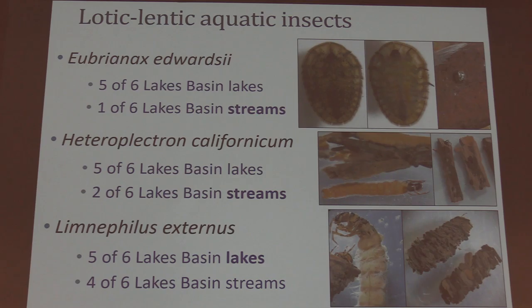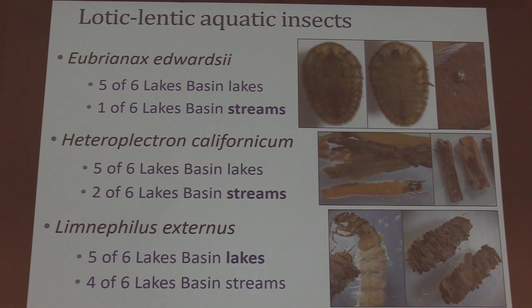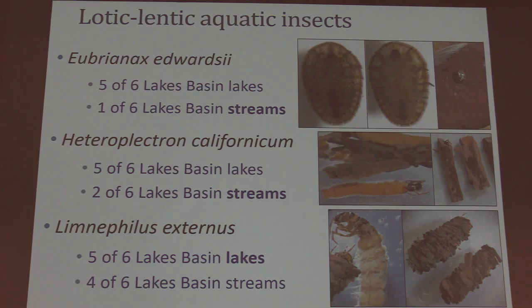We did find some aquatic insects present in both lake and stream habitats. First, we have Eubriacontiborzei, the water penny beetle, and Heteroplectron californicum, a caddisfly — both primarily stream-dwelling insects, but we found them in five of the six Lakes Basin lakes. We also have Limnophilus externus, another caddisfly that is primarily lake-dwelling, and we found it in four of the six streams. On site, it was easy to tell the caddisfly apart because caddisfly make cases for protection, which are unique to the species. The caddisfly were more abundant in lakes, and while the water penny beetle had higher abundance in streams, it was actually more frequently found in lakes — which is interesting.